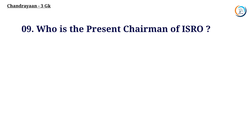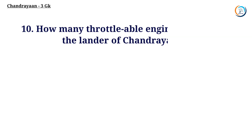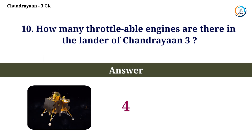Who is the present chairman of ISRO? Answer: S. Somnath. How many throttleable engines are there in the lander of Chandrayaan-3? Answer: 4.